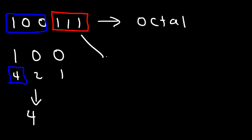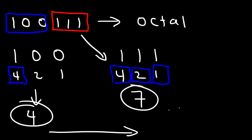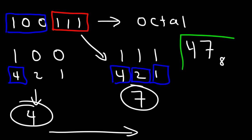Now for the second group, the number is one one one. Because we have a one for each position we use the four, the two, and the one. Four plus two plus one is seven. So our answer is four seven, or forty-seven in the octal system, which is a base eight system.